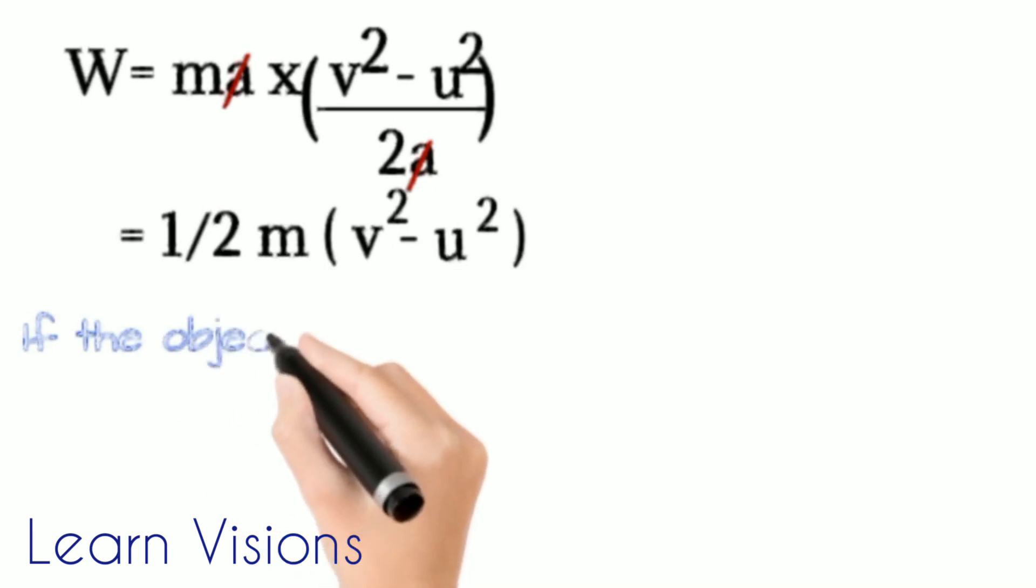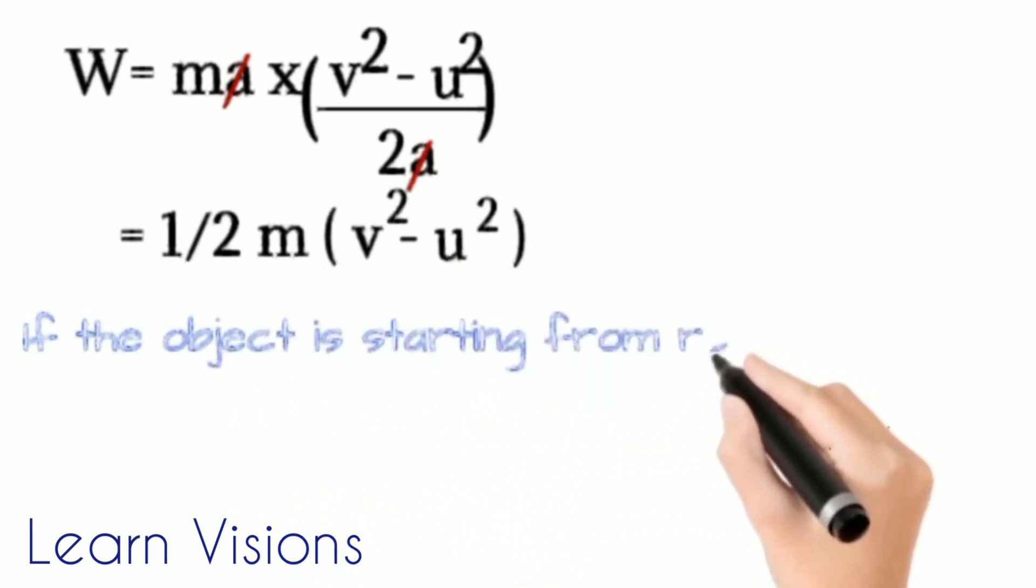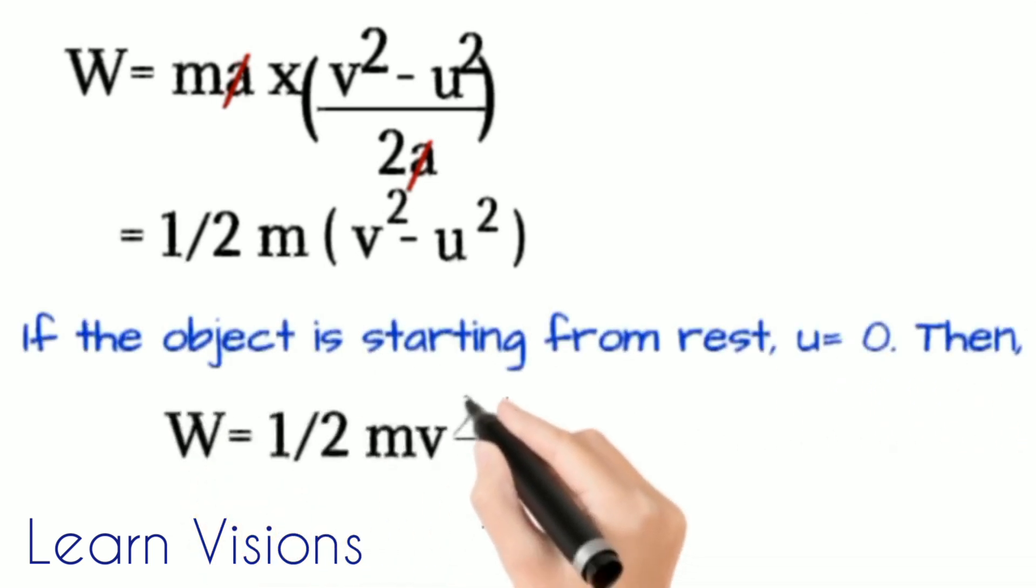As we know that the object started moving from rest, its initial velocity will be 0, and we will get half mass times v squared.